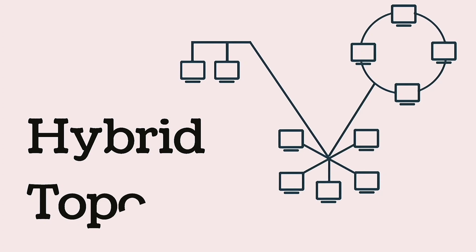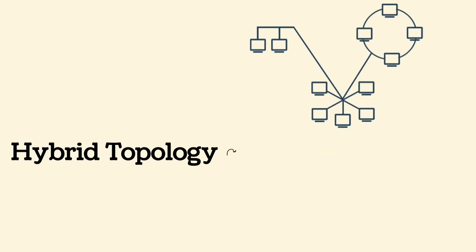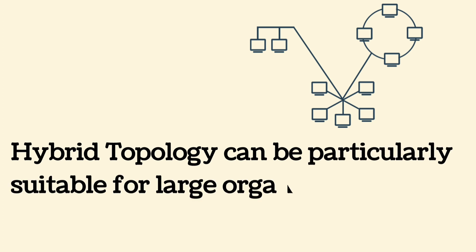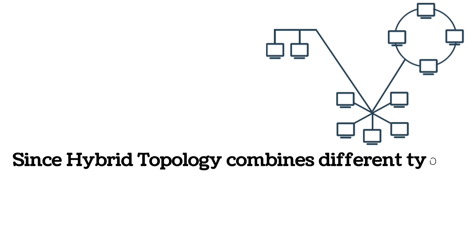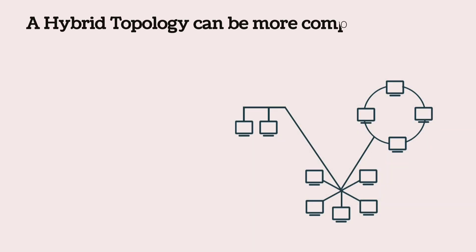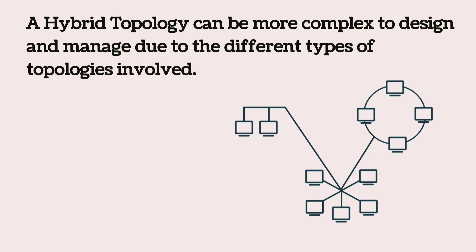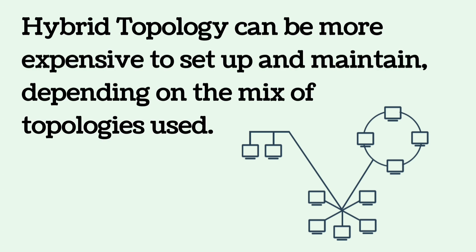Hybrid topology is a combination of two or more different types of network topologies. Advantages: it can be particularly suitable for large organizations due to its scalability and flexibility; since it combines different topologies, if something goes wrong in one part of the network, it typically will not affect the rest. Disadvantages: hybrid topology can be more complex to design and manage, and more expensive to set up and maintain, depending on the mix of topologies used.